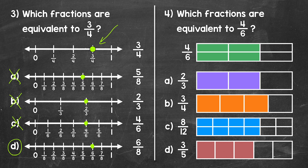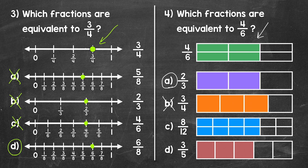Moving on to number four, we have: which fractions are equivalent to four sixths? We have a model to go off of — four sixths of that rectangle is shaded. Let's start with A, two thirds. We just talked about these fractions in number three. Two thirds is equivalent, and we can see that with this model — the same amount, the same part of the whole rectangle is shaded in. So two thirds is equivalent, as we also saw with the number lines in number three. Let's move on to B, three fourths. Is three fourths equivalent? No, three fourths is greater than four sixths — a greater amount of that rectangle is shaded in, so this is not equivalent. Taking a look at C, we have eight twelfths. Eight twelfths has the same amount of the rectangle shaded in, so eight twelfths is an equivalent fraction.